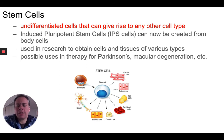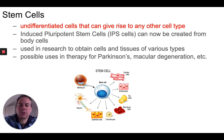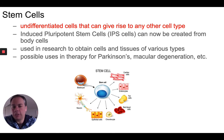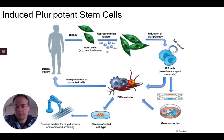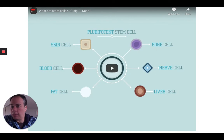It used to be that stem cells could only be found in embryos, so any research was done using embryonic cells. But in the last decade or so, scientists have developed ways of taking differentiated cells — for example fat cells — and treating them to turn them back into stem cells. These can then be caused to differentiate into different types of tissue for medical treatments. Basically, these cells get reprogrammed from a differentiated form back into an undifferentiated form, and then transformed into other types of tissues.